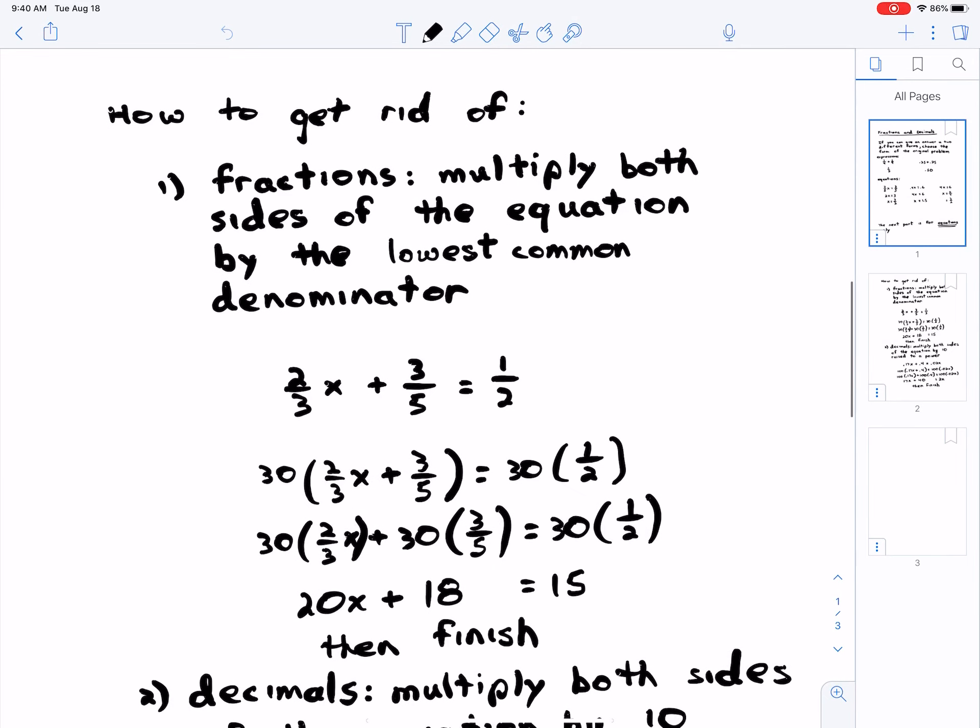How do you get rid of fractions? How do you get rid of decimals? So how do you get rid of a fraction? You multiply both sides of the equation by the lowest common denominator.